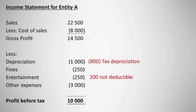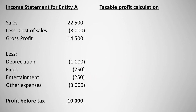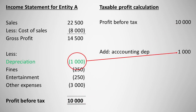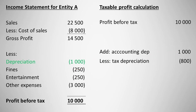The calculation of taxable profit requires us to start with accounting profit before tax, then adjust for items that are treated differently for tax purposes. The first item is depreciation — we add back accounting depreciation of $1,000 to reverse it, since it was subtracted in arriving at profit before tax. We then subtract tax depreciation of $800.